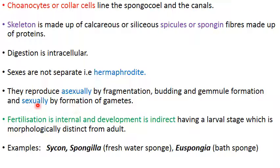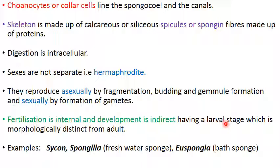Sponges also reproduce sexually by formation of gametes. Fertilization is internal, and development is indirect — they have a larval stage that is distinct from the adult. Since sponges are mostly sessile, the larval stage is free-swimming, allowing them to form colonies elsewhere. Examples listed in the NCRT book are Sycon, Spongilla (the freshwater sponge), and Euspongia, which is the bath sponge — the dried form is used for bathing purposes.